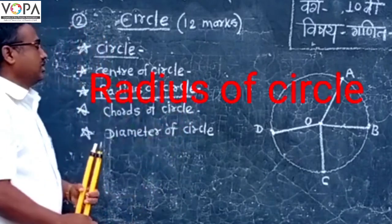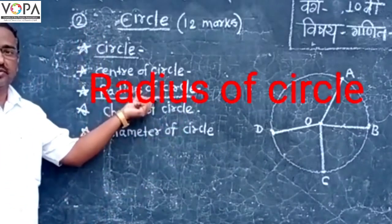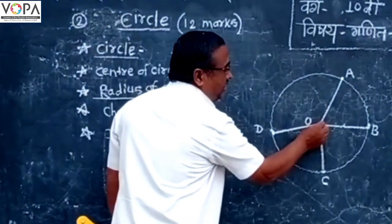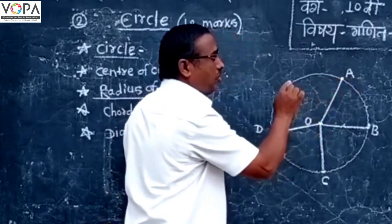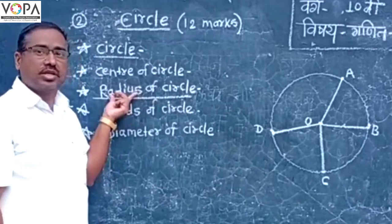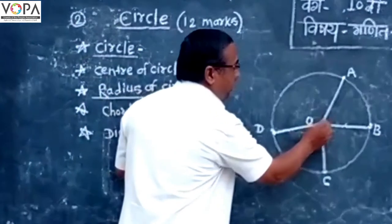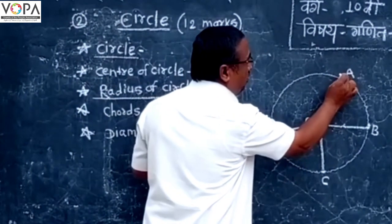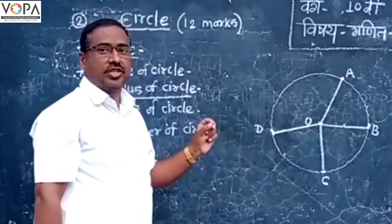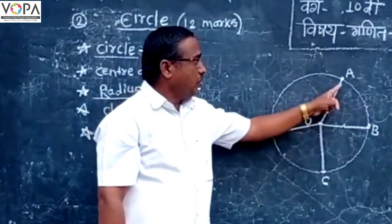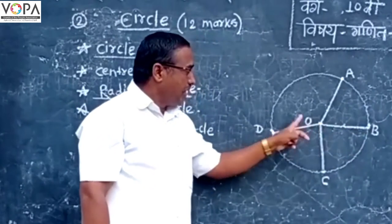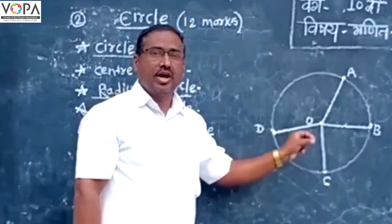The next term is the radius of circle. The line segment from the center to a point on the circle is said to be the radius of the circle. In the figure, segment OA, segment OB, segment OC, and segment OD are radii of the circle.